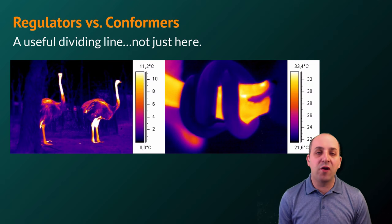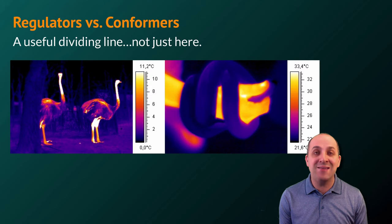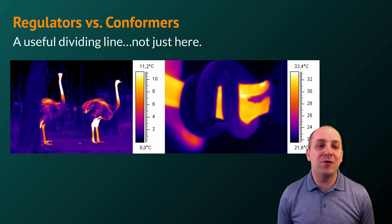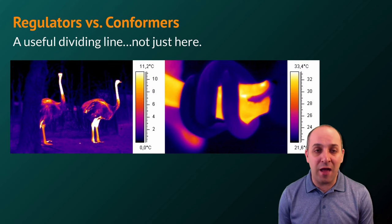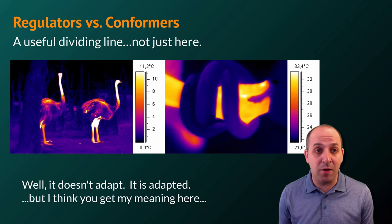Generally speaking, when we look at how organisms handle constraints of their environment, there are two major strategies. You could be a regulator or a conformer. A regulator spends energy in order to maintain internal conditions within a certain range, whereas a conformer does not spend any energy to do that and adapts to be able to deal with a wide range of conditions in the environment as a result.